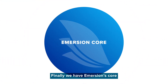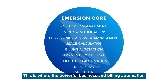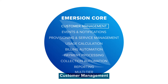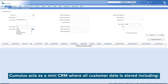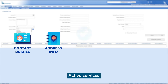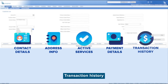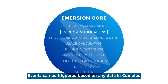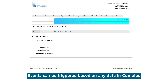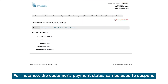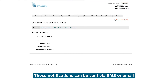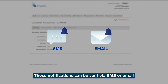Finally, we have Immersion's Core. This is where the powerful business and billing automation functionality of Immersion takes place, including customer management. Cumulus acts as a mini CRM where all customer data is stored, including contact details, address information, active services, payment details, transaction history, and more. Events can be triggered based on any data in Cumulus — for instance, a customer's payment status can be used to suspend or reactivate an account, or to send a notification to the customer via SMS or email.